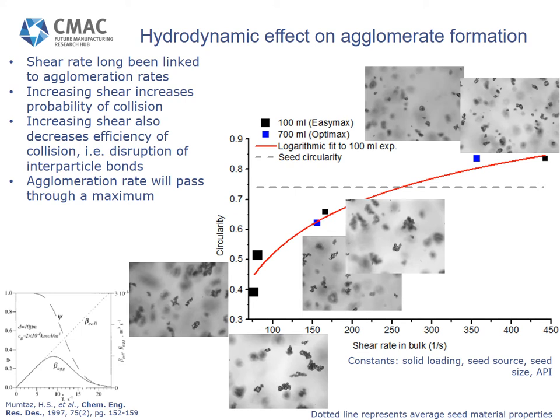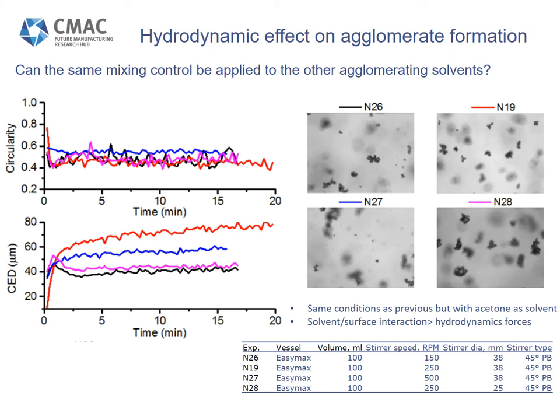How effective is bulk shear at predicting scale-up behaviour? The final particle circularity varies with bulk shear rate, and the fit is only to experiments at the 100 milliliter scale. Comparing the response of experiments performed at 700 milliliter scale to this fit, they also fall along the trend, suggesting that average bulk shear is a suitable parameter for scaling up or transferring agglomeration processes. But does this control over agglomeration with mixing conditions apply to other solvents? Using acetone — already identified as having strongly agglomerating behaviour — although we see some changes in final particle size, the particles are always agglomerated and end up with the same circularity by the end, regardless of the mixing conditions applied. This suggests that solvent surface interactions can be strong enough to overcome any of the hydrodynamic forces present.